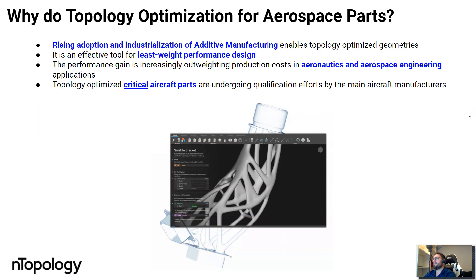The rising adoption and industrialization of additive manufacturing technologies has enabled the creation of very complex geometries, such as topology-optimized geometries. Topology optimization is actually a very effective tool when it comes to generating highly performing designs with the least amount of weight.